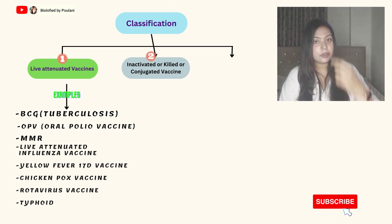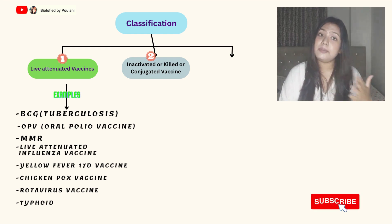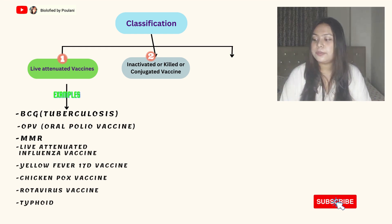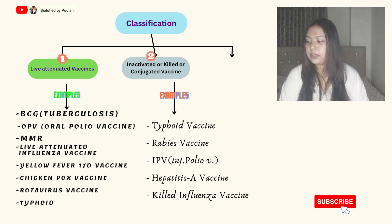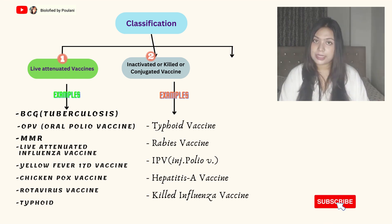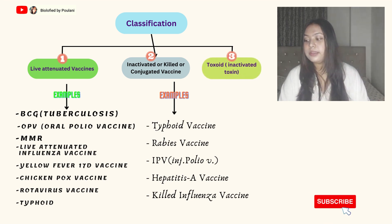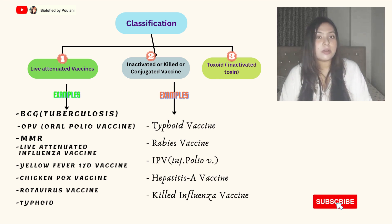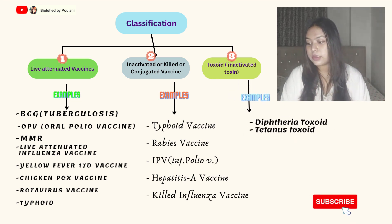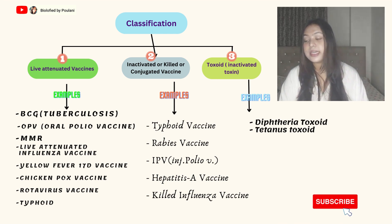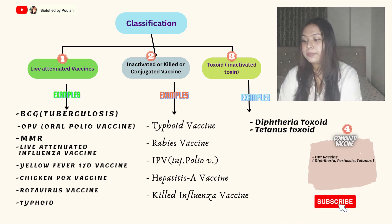Next is inactivated or killed vaccines — these cannot multiply inside our body; they are already in a killed or inactivated state. Vaccines in this category include typhoid vaccine, rabies vaccine, IPV, hepatitis A vaccine, and killed influenza vaccine. Another type is toxoid vaccines, which use a bacterium's inactivated exotoxin. Under this come diphtheria toxoid and tetanus toxoid. The DPT vaccine is a combined vaccine covering diphtheria, pertussis, and tetanus.